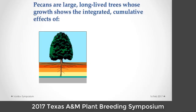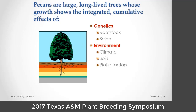These large, long-lived trees ultimately show the integrated cumulative effects of their genetics. If they're grafted, that includes both the rootstock and the scion. They show the effect of the environment, the climate, the soils, and the biotic factors. They show the impact of culture — irrigation, fertility, and pest control. Getting all of those things into test systems and then monitoring those tests over time obviously complicates the kind of work you can do with colleagues across the range.